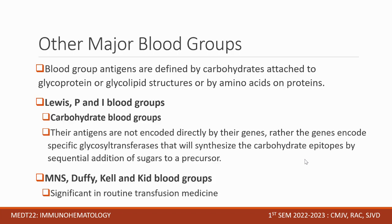Blood group antigens are defined by carbohydrates attached to glycoprotein or glycolipid structures, or by amino acids on proteins. We have Lewis, T, and I blood groups — they are carbohydrate-based blood groups, so their antigens are not encoded directly by their genes. Rather, the genes encode specific glycosyl transferases that synthesize the carbohydrate epitopes by sequential addition of sugars to a precursor. We have MNS, the Duffy, and Kidd — they are significant in routine transfusion medicine.